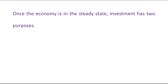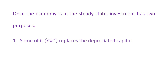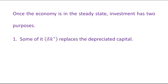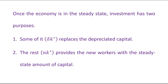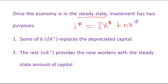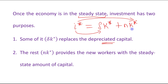Once the economy is in the steady state, investment has two purposes. First, delta K star replaces the depreciated capital. Second, NK star provides new workers with the steady state amount of capital. At the steady state, I star equals delta K star plus NK star.